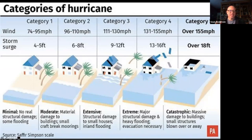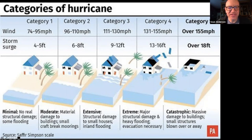This is the Saffir-Simpson scale, which we've been using for decades. There is movement to create a different rating of hurricane intensity, but for now this is what we're using. Going from left to right is the least strong storm to the most strong storm.